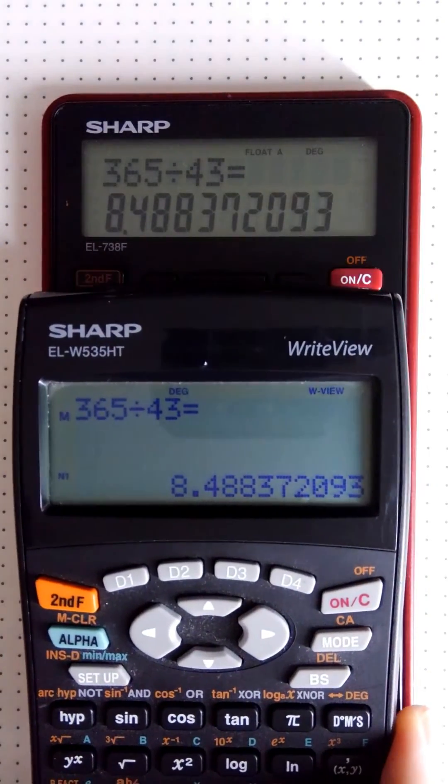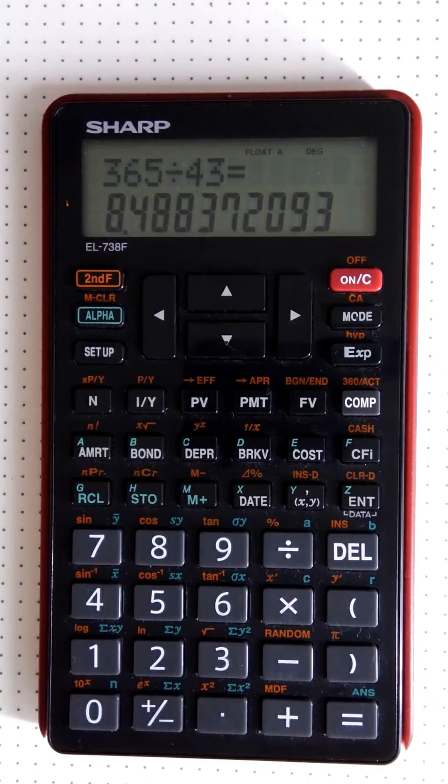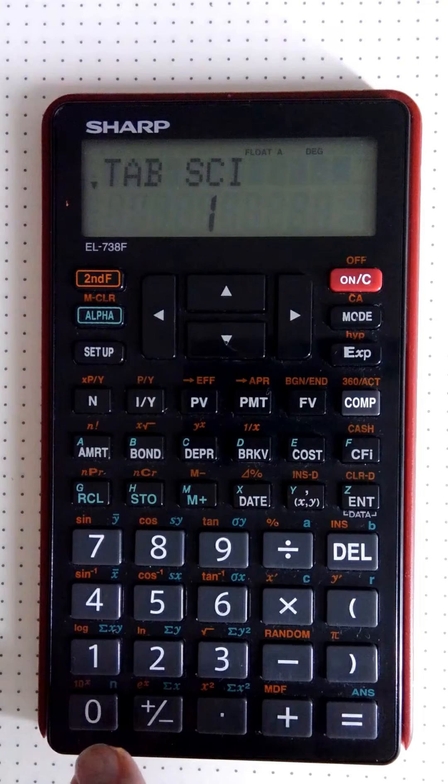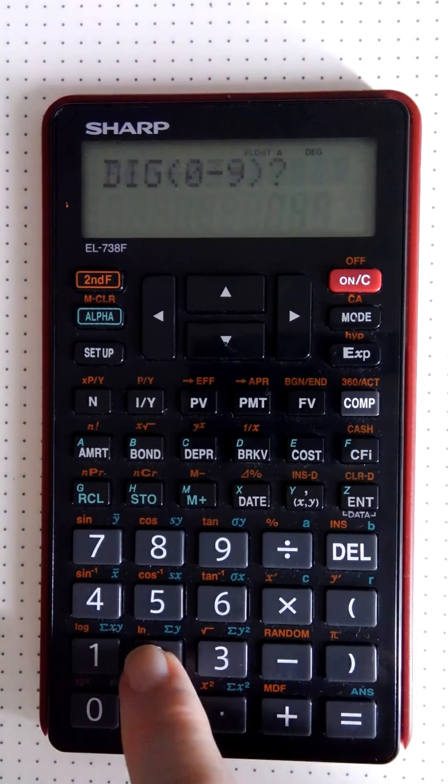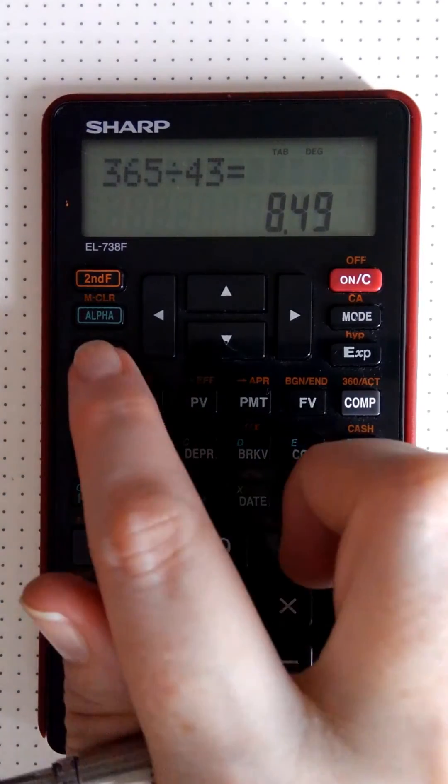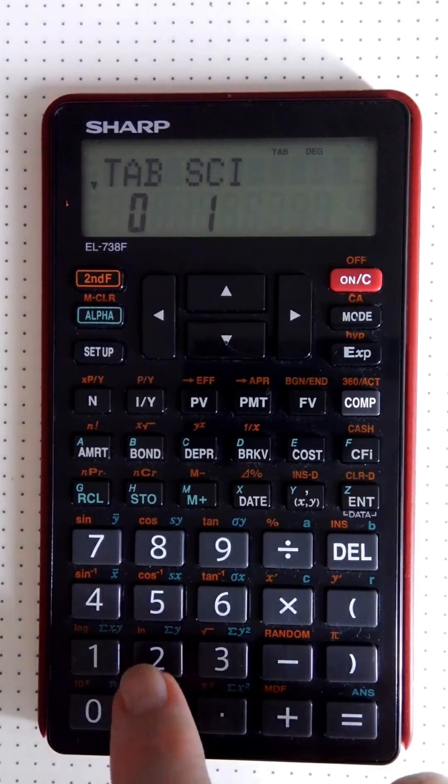So now how do we change it back to two decimal places? Because again, in finance we would like two decimal places. It's setup, it's zero, it's zero, and it's two. So that's the change between the two of them. To go back to floating point notation, it's setup, it's zero, and it's two.